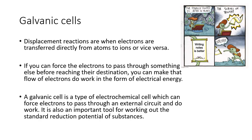So what are galvanic cells? Displacement reactions, what we learned in the last video, is when electrons are transferred directly from atoms to ions — when they collide with and are in contact with each other. However, if you can force the electrons to pass through something else before reaching their destination, you can make that flow of electrons do work in the form of electrical energy. A galvanic cell is a type of electrochemical cell which can force electrons to pass through an external circuit and do work. It is also an important tool for working out the standard reduction potential of various substances, which we'll learn about in the next video.